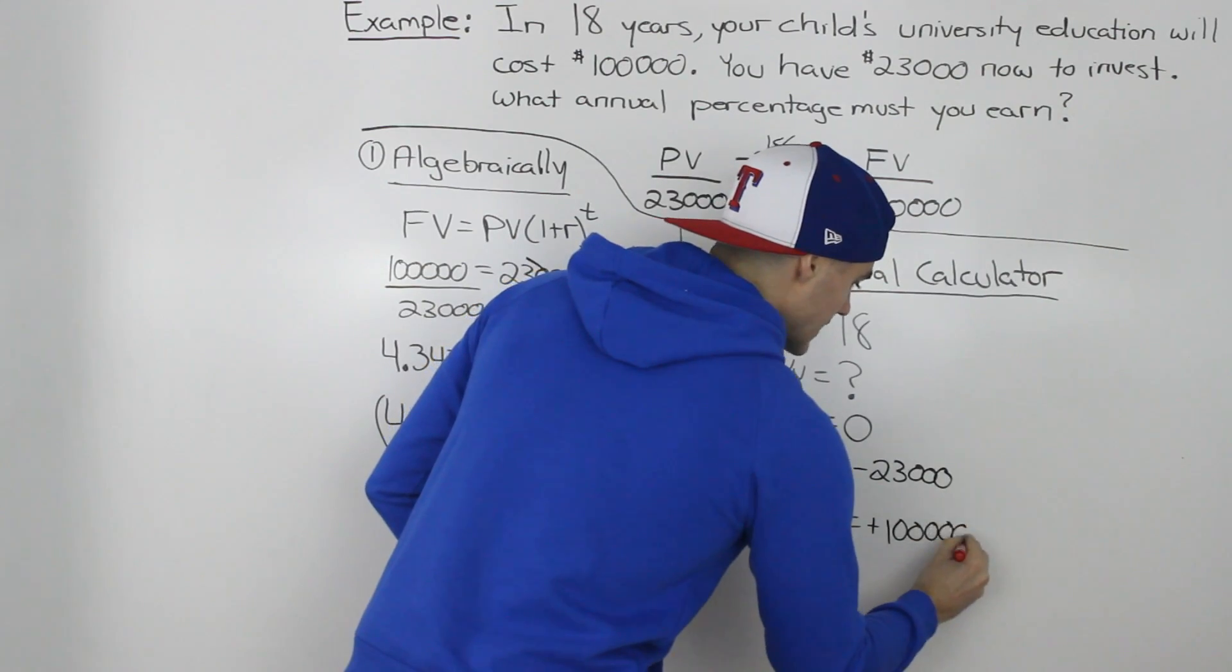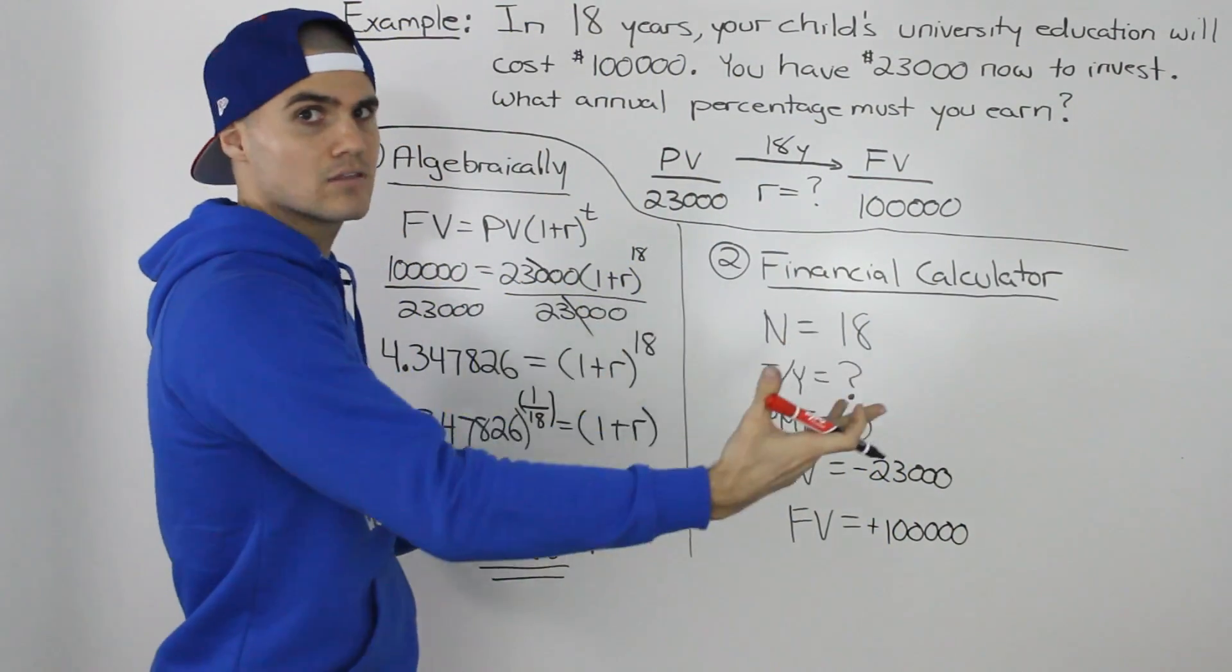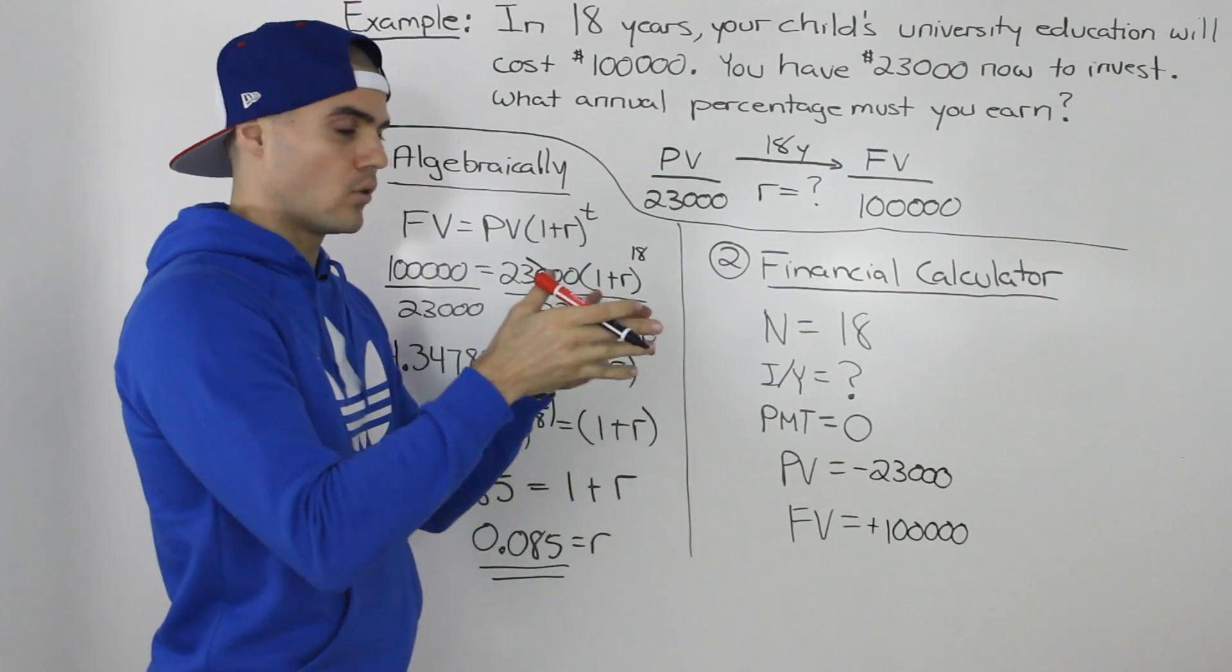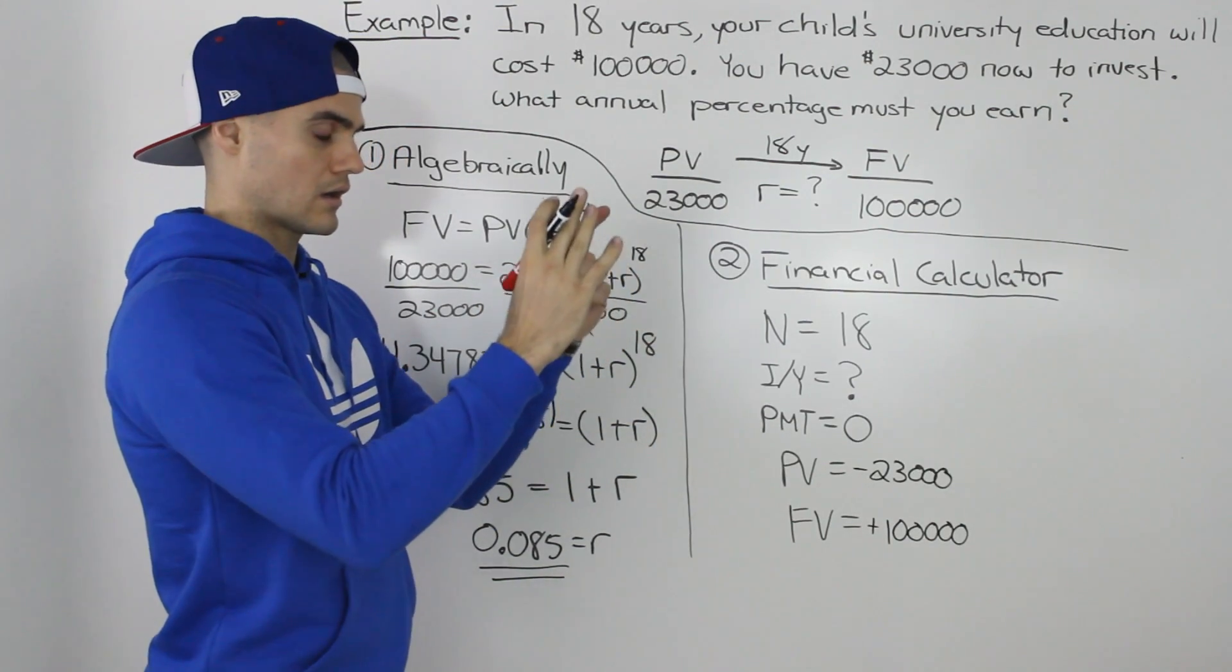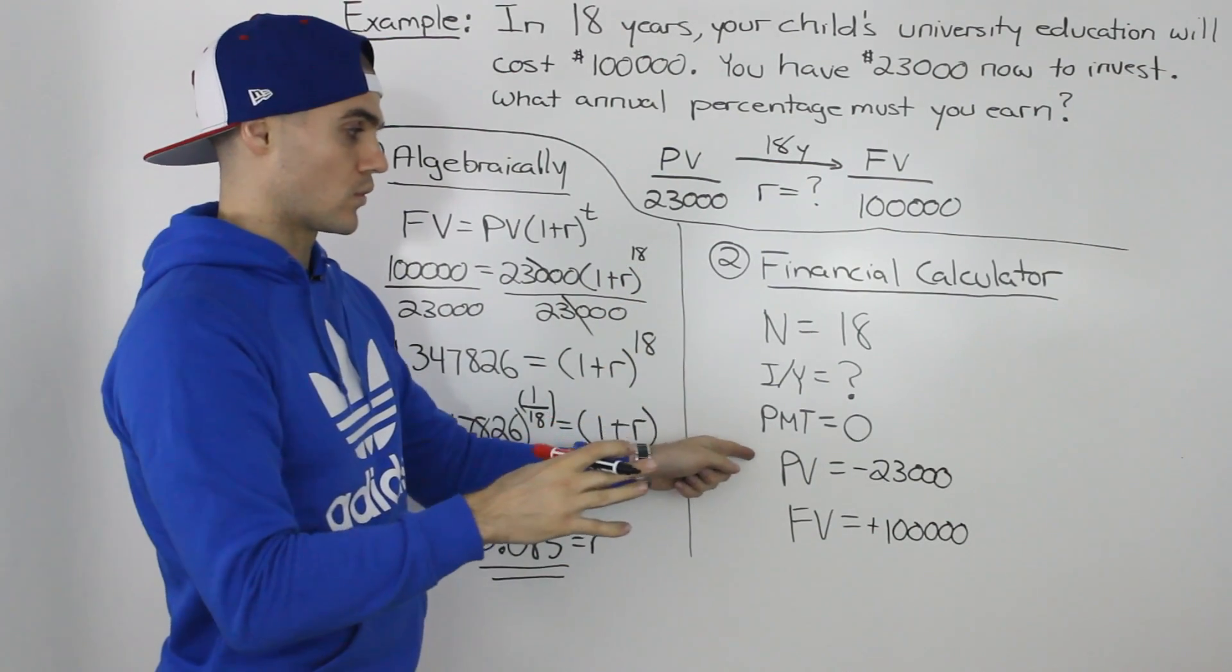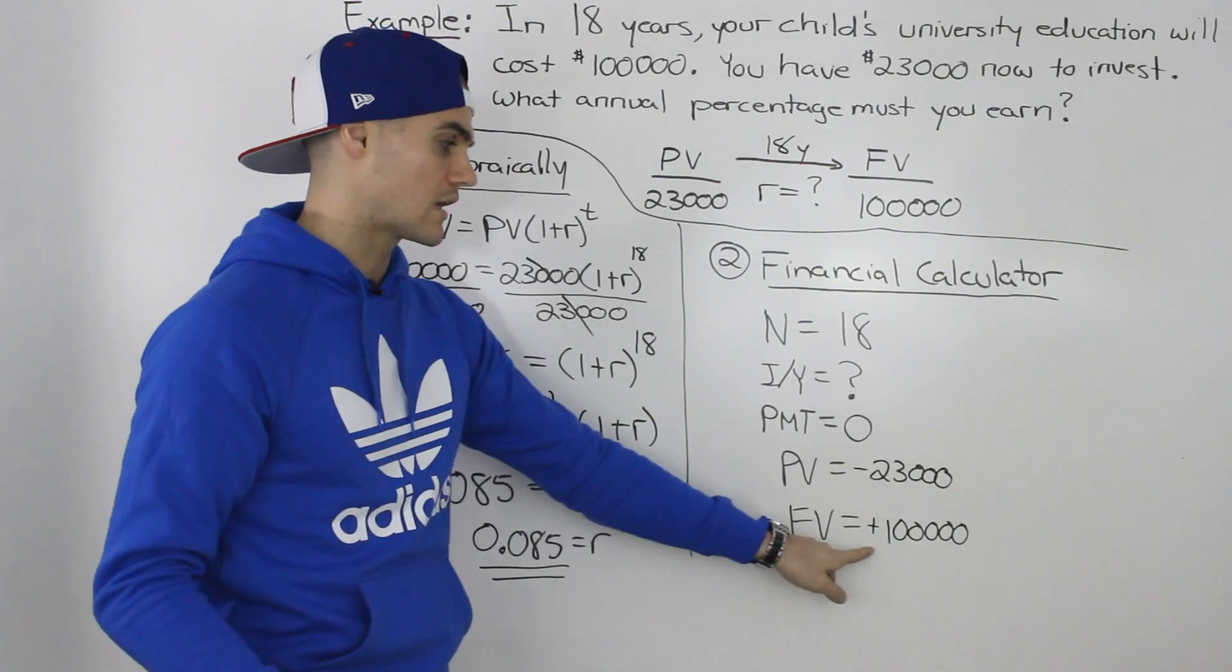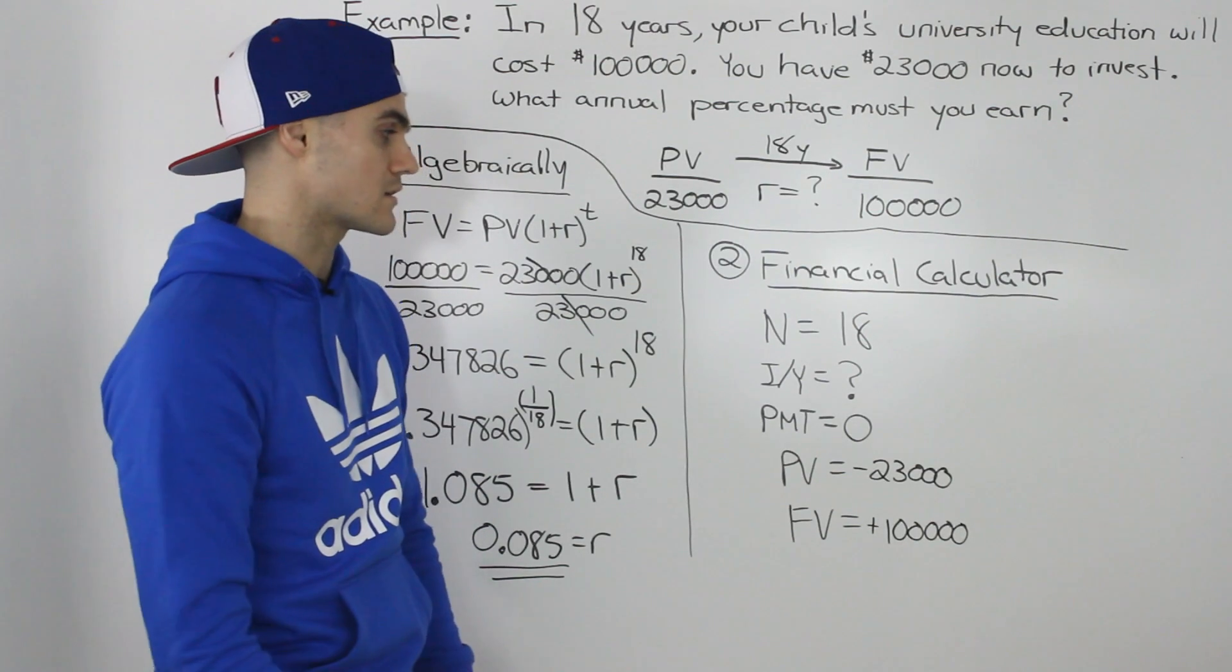Now you may be asking, aren't we taking that $100,000 and paying the university? Well, that's a separate transaction. I'm talking about only what happens in the bank account. From the perspective of the bank account, we're putting $23,000 in the bank account, that's negative, and then we're taking $100,000 out of the bank account. That's money coming towards us, so it's positive.